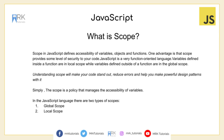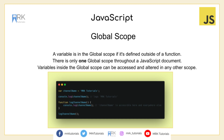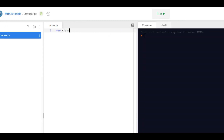Understanding scope will make your code stand out, reduce errors, and help you make powerful design patterns. Simply, scope is a policy that manages the accessibility of variables in the code. In JavaScript there are two types of scopes: global scope and local scope. Global scope is a scope with high accessibility and it can be reached from any part of the code. There will be only one global scope. Let's understand it with a code snippet.